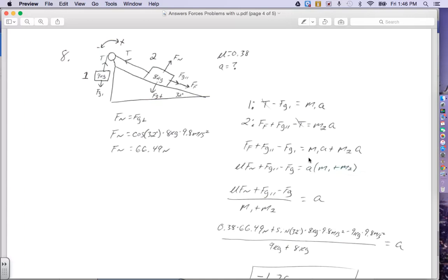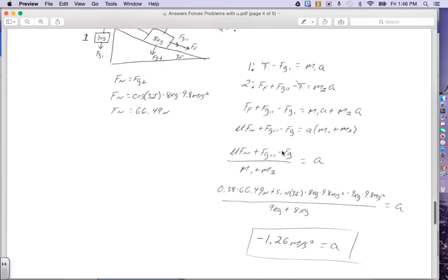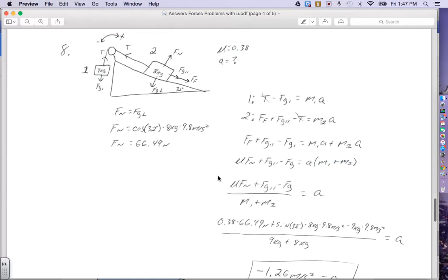This equation stays pretty much exactly the same, except I factor out the accelerations, and I turn friction into the coefficient times the normal force because that's what friction is. I'm going to divide by the masses that are in my parentheses here after I factor out my A, and that's why they're in the denominator now. Plugging in my numbers, my coefficient was given at 0.38. My normal force we solved for, 66.49 Newtons. Gravity parallel, we have an equation for that, which is the sine of 32 degrees times the mass, 8 kilograms, times 9.8 meters per second squared, and force of gravity is mass, 9 kilograms, times 9.8 meters per second squared. All that divided by the two masses added together, which is 9 and 8, and that's going to give us an acceleration of negative 1.26 meters per second squared. Negative just means that this block is going to go up the hill as this hanging block falls down.